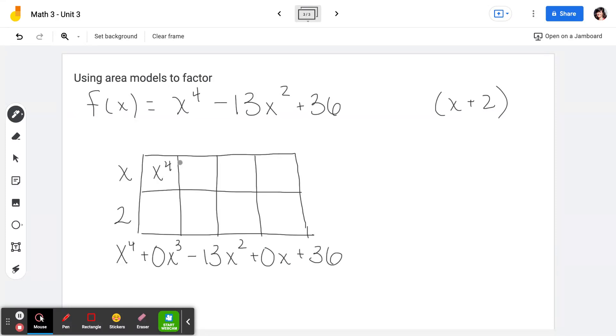So we start always by putting our first term in our first box. We know that we multiply x cubed by x to get x to the fourth power. And that means that when we multiply x cubed by 2, we would get 2x cubed.